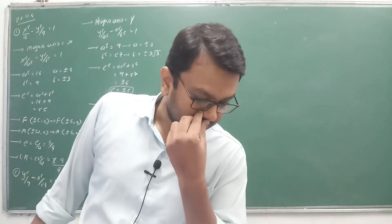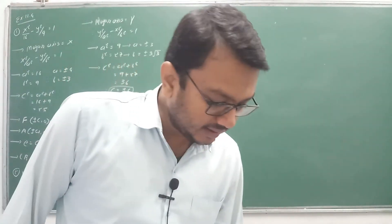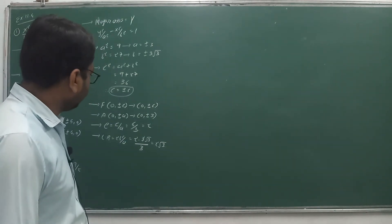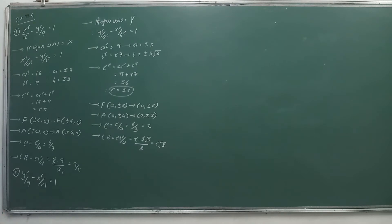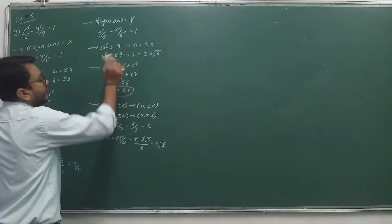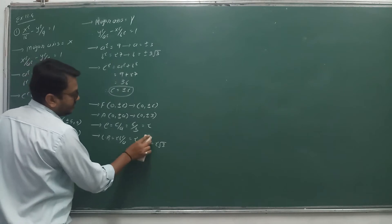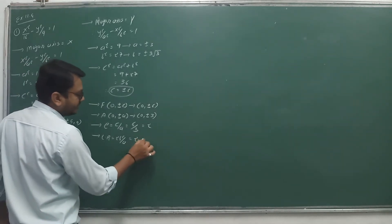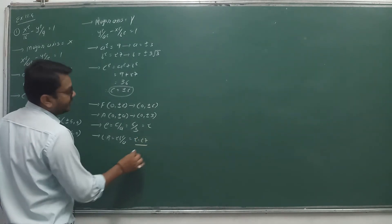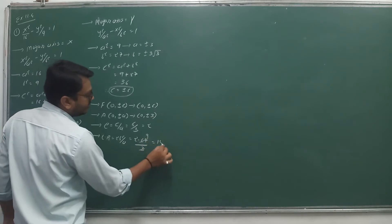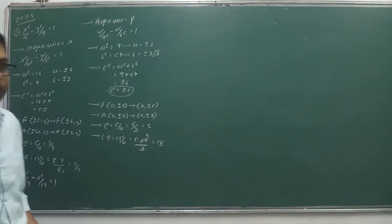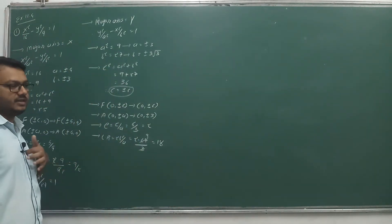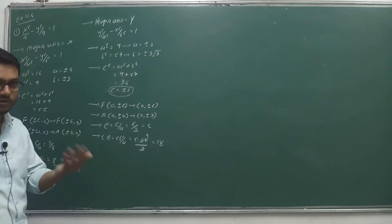Is it clear? I noticed a small mistake just now — b² is 27, not 3√3. So b square must be used, not b. Therefore LR = 2×27/3 = 18. Sometimes in haste calculation mistakes happen, so be careful. In the exam no one will point out your mistakes, so work carefully and thoughtfully.